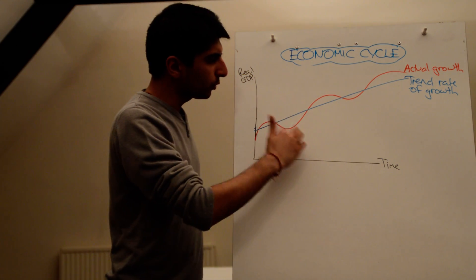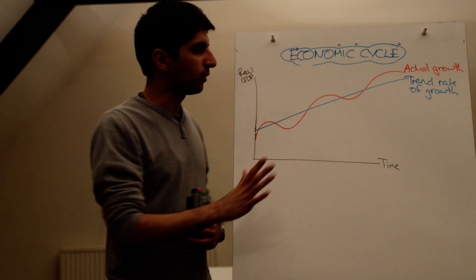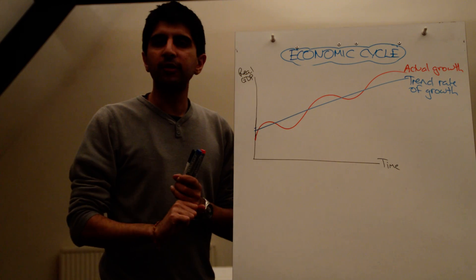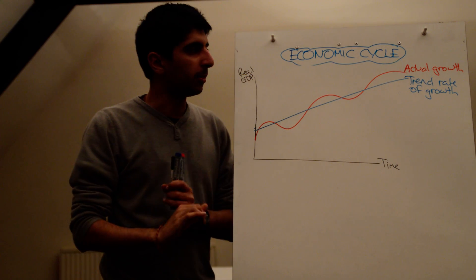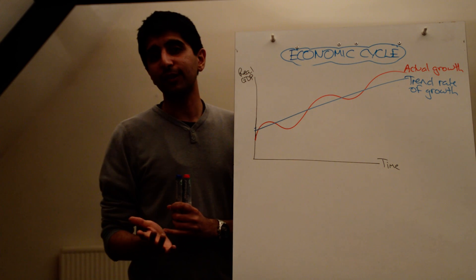So why does actual growth actually fluctuate? It can be a whole number of reasons, really. The very most simple reason, which you don't really need to know, but at AS level it's all you need to know I guess, is shocks. Supply-side shocks, demand-side shocks.